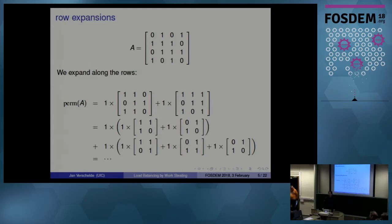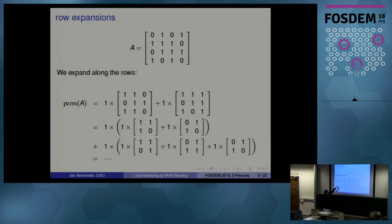Why is this problem so interesting? First of all, the algorithm is really straightforward. In high school you must have computed determinants — well, computing the permanent is actually much easier because you don't have to do the sign patterns. So it's a simple row expansion. You have two ones on the first row, so you reduce it to two simpler problems, and it goes on like that. This is the permanent — a very simple algorithm to code up.